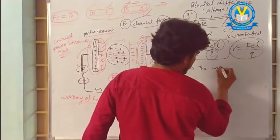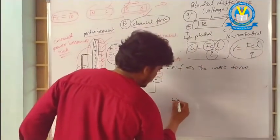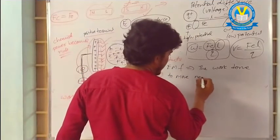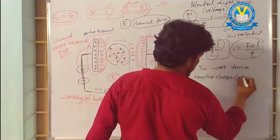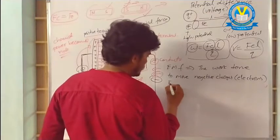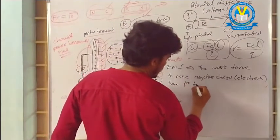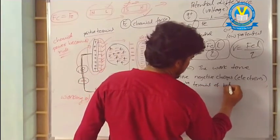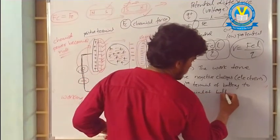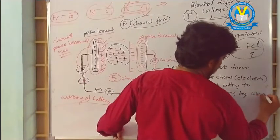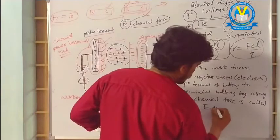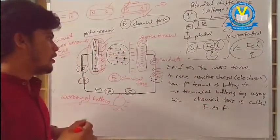The work done — what is that work done? The work done to move negative charges, meaning electrons, from the positive to the negative terminal of the battery by using chemical force is called the electromotive force.